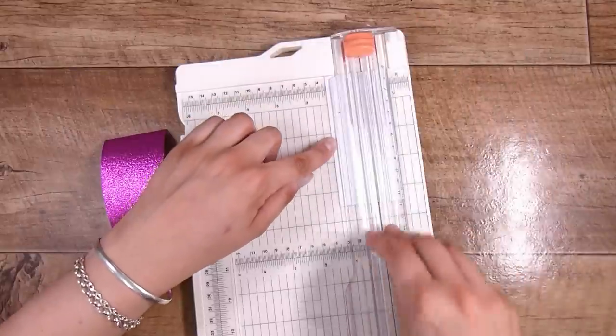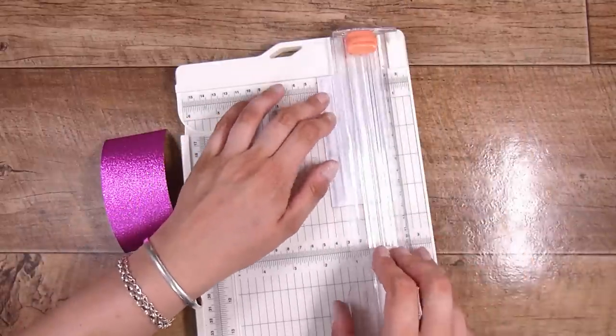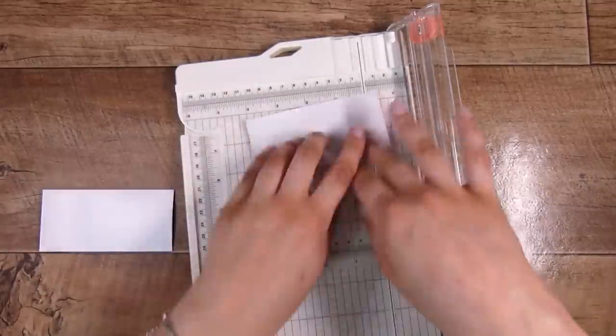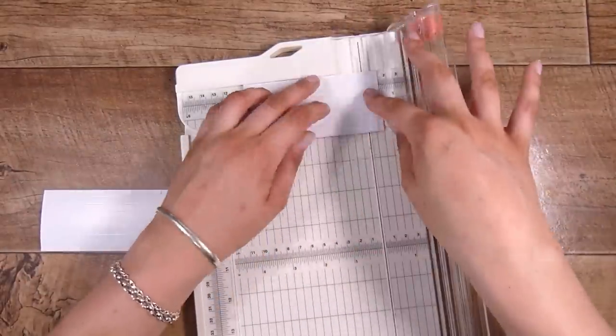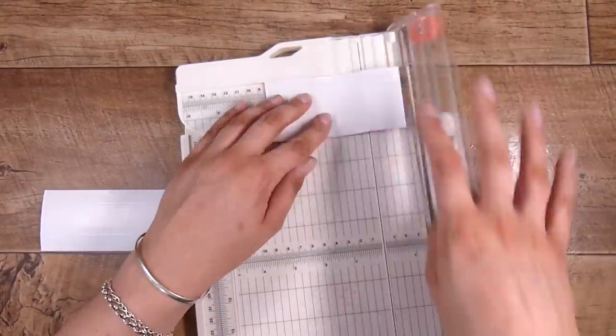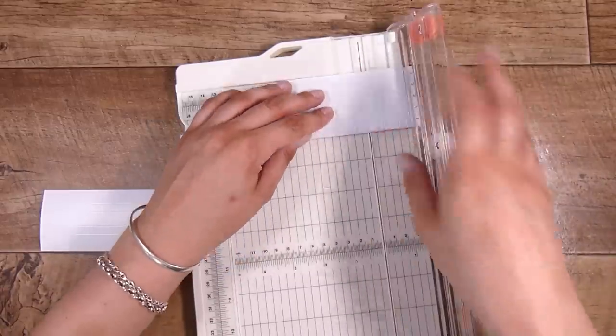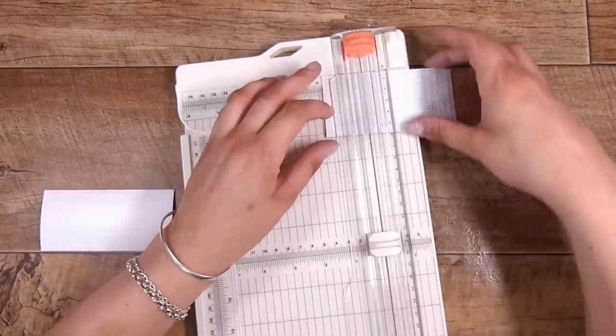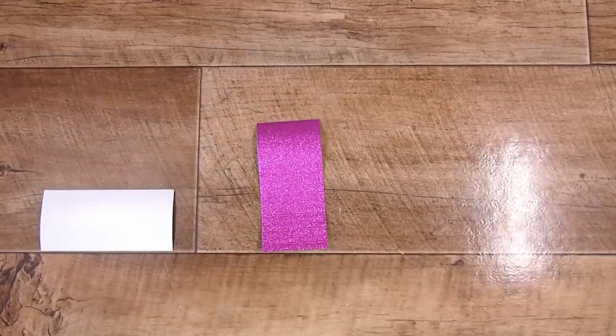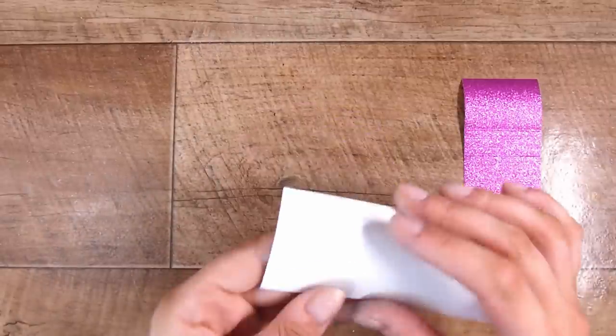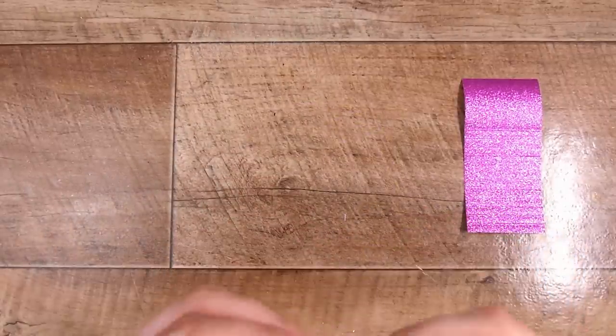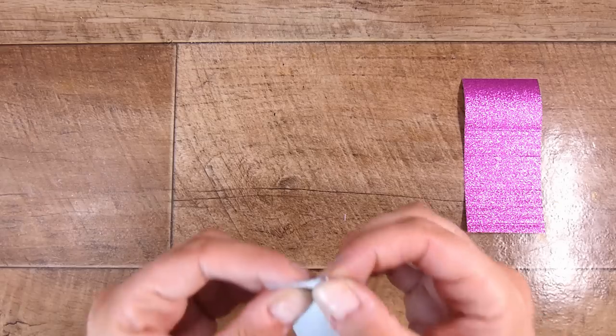I am going along and scoring on the back of this one, so I'm doing this one vertical and I am scoring every eighth of an inch. You actually don't have to score the back if you're just comfortable folding. Then I'm going to take the other piece of glitter cardstock and I'm going to go the other way, so this one is kind of horizontal and I am going to score that again every eighth of an inch.